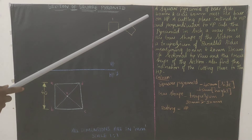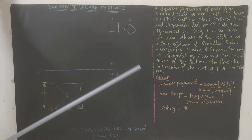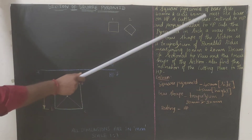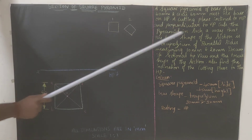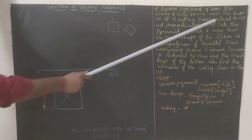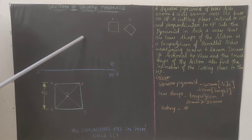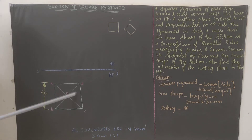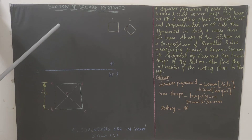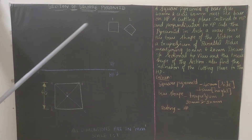The side of the square is 40 mm and the axis height is 65 mm. The solid rests with its base on HP. A cutting plane inclined to HP and perpendicular to VP cuts the pyramid. Inclined to HP means the cutting plane will be drawn in the front view. If inclined to VP, we would draw the cutting plane in the top view. So in this case we are drawing the cutting plane in the front view only.